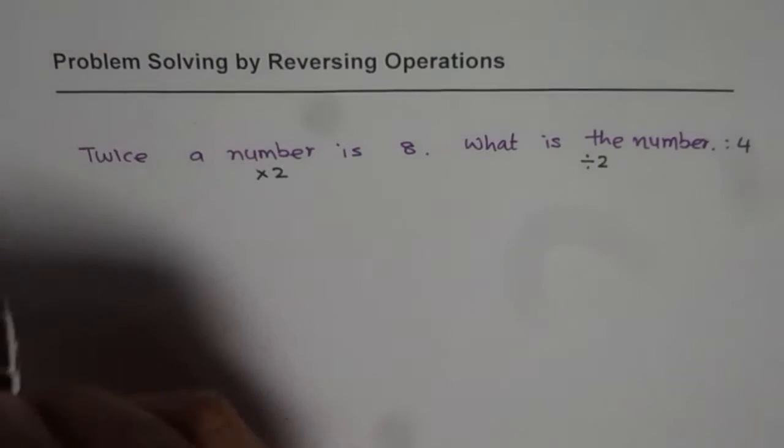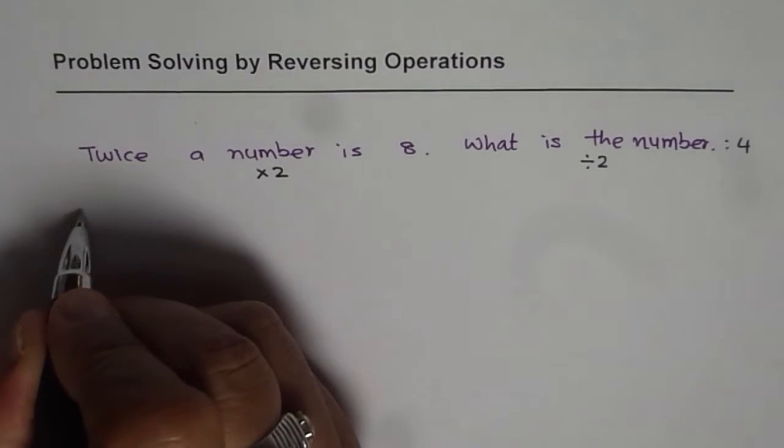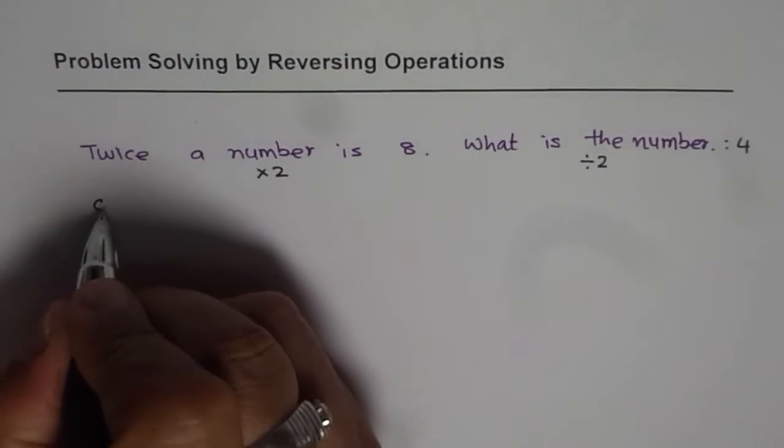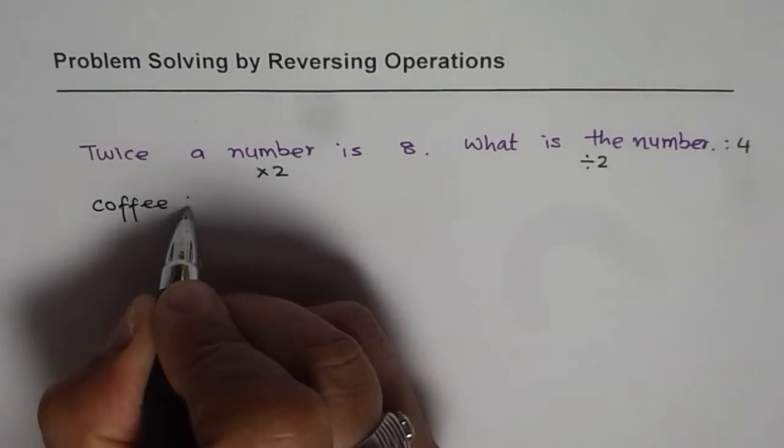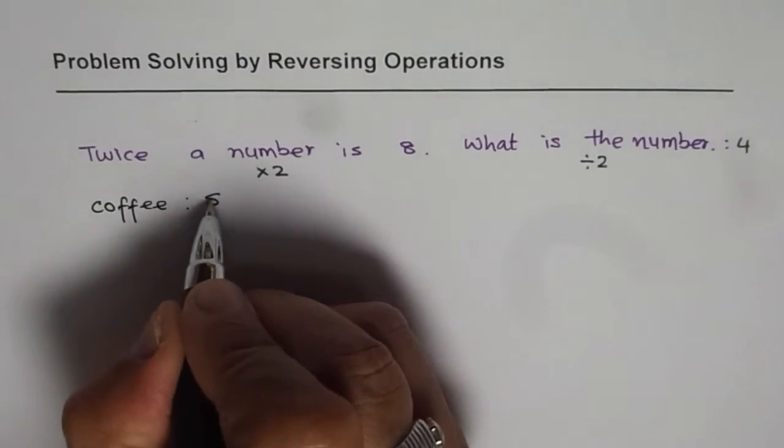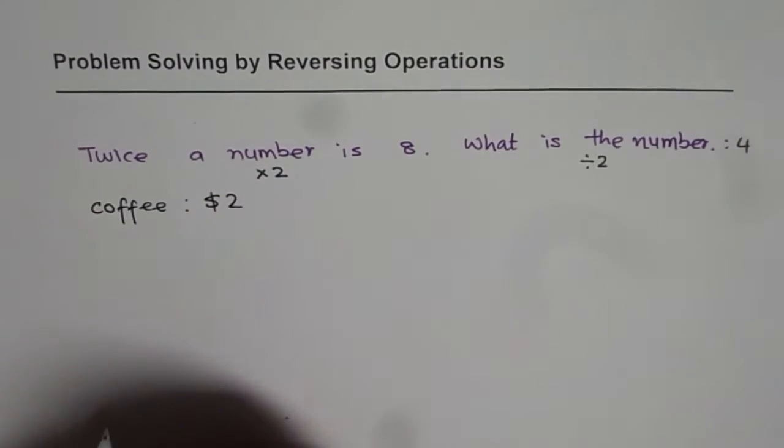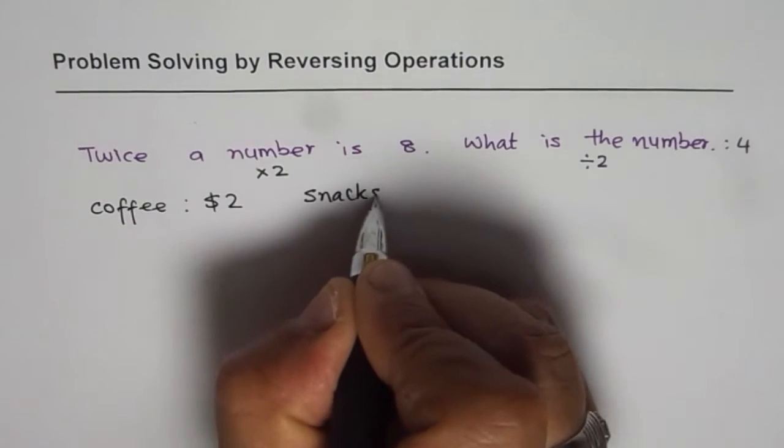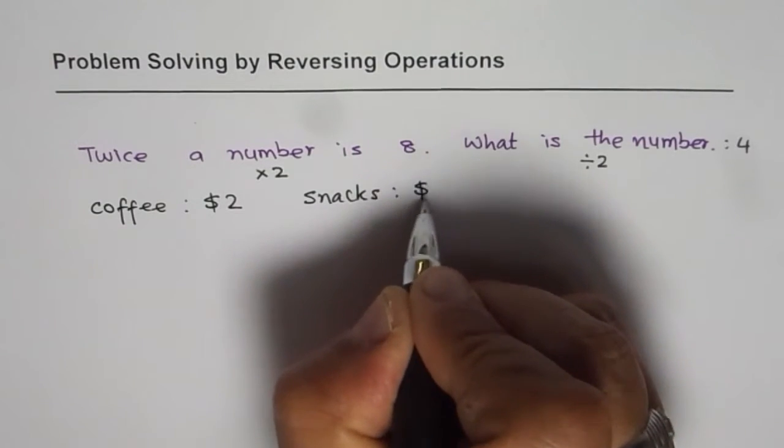Let us say you have some change in your pocket and you buy a cup of coffee for 2 dollars and some snacks for 5 dollars.